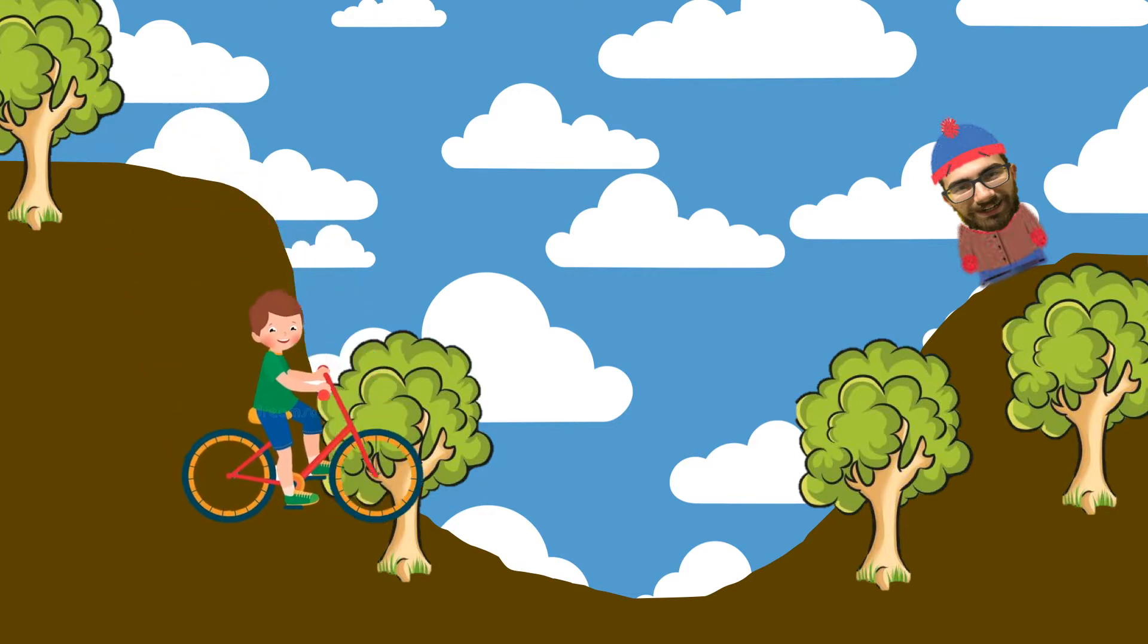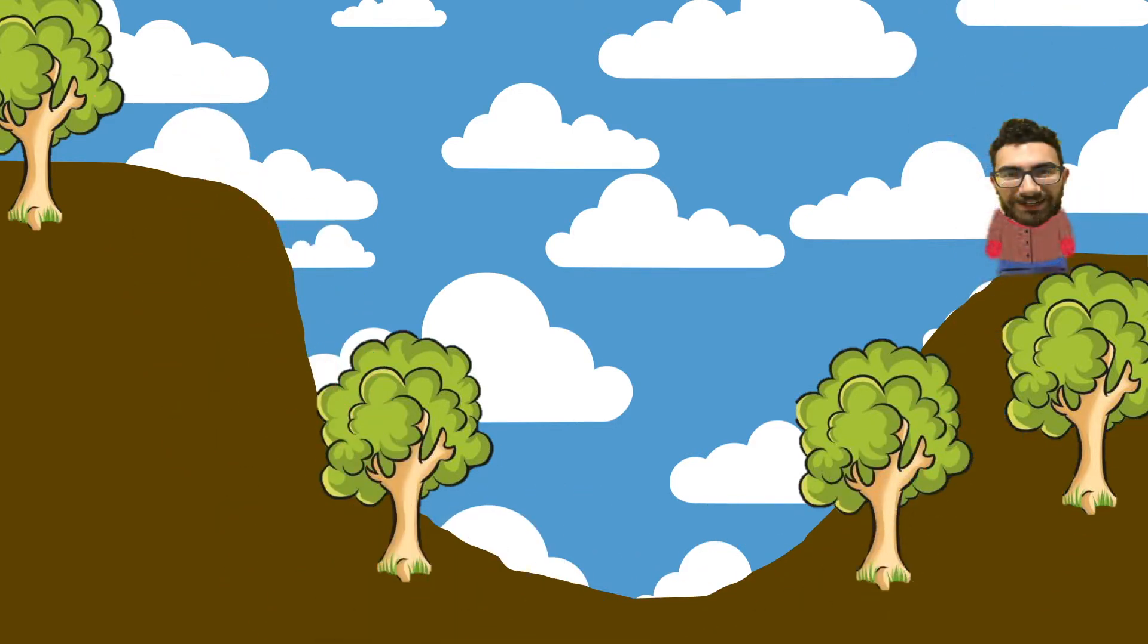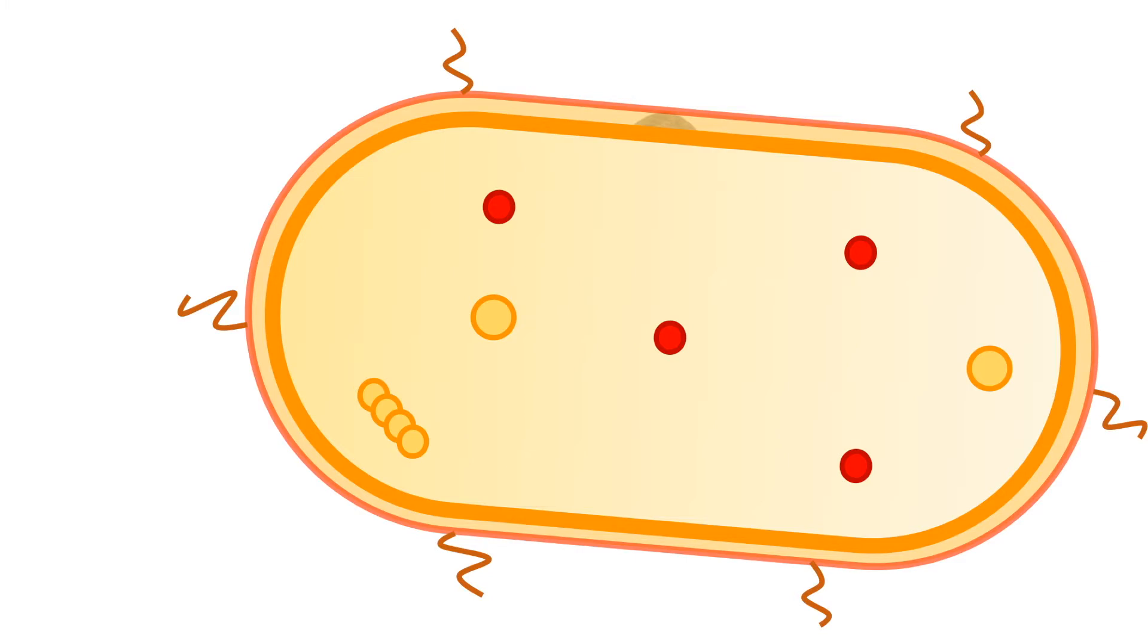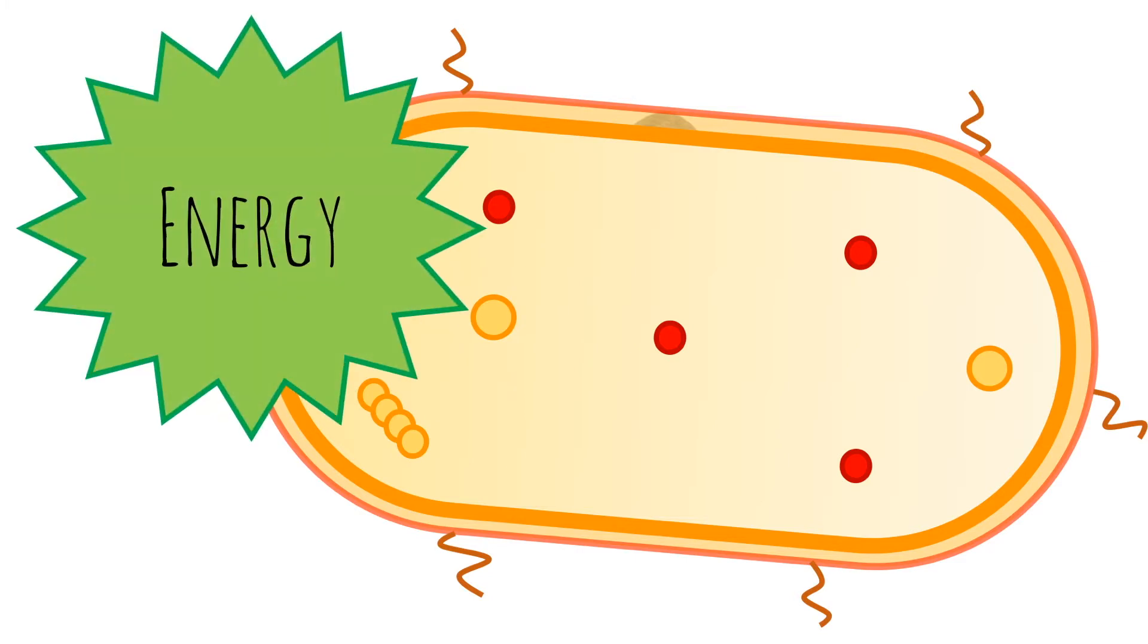Cells are capable to connect a favorable reaction with an unfavorable one. So this is a cell. Cells have three ways to use and transform energy.